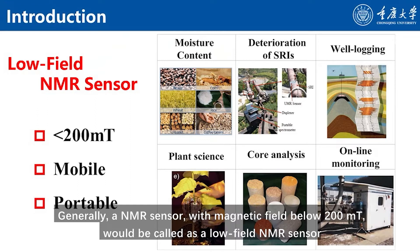Generally, an NMR sensor with a magnetic field below 200 millitesla would be called a low-field NMR sensor.